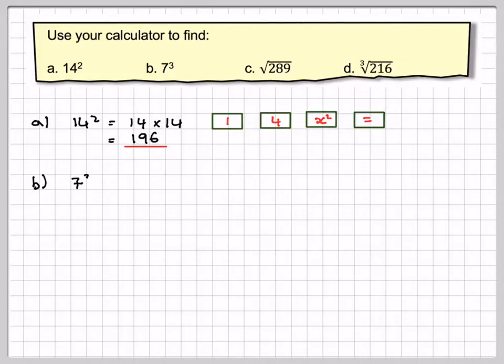Part B, 7 cubed means 7 times 7 times 7, so using our calculator again, using the direct method.